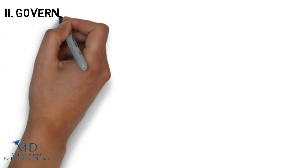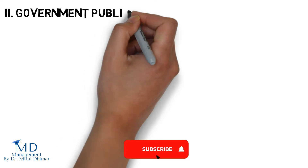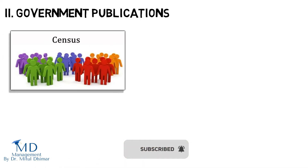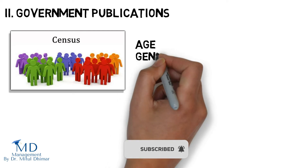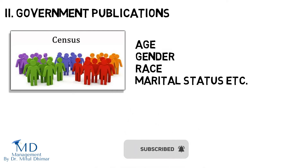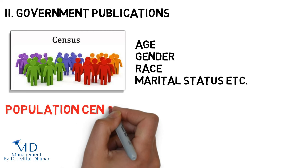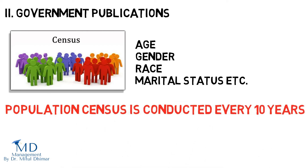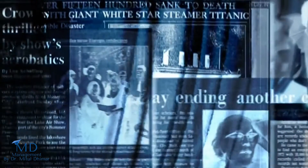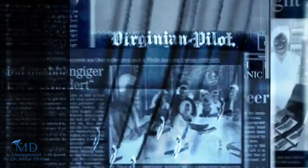2. Government publications: Census data gives details of the entire population like age, gender, race, marital status, etc. Population census is conducted every 10 years and is the most basic source of information. For example, published articles of local bodies by central and state government.